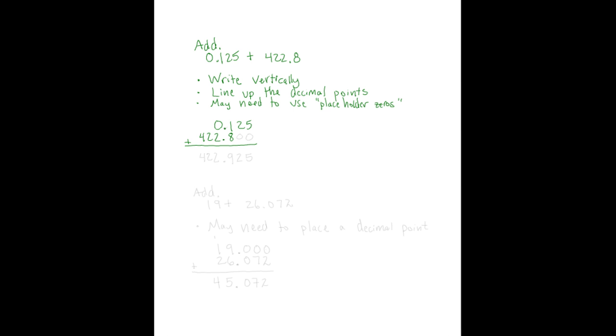Notice that the 5 and the 2 are sort of hanging. They don't have digits beneath them. So we want to insert placeholder zeros, one beneath the 2 and one beneath the 5. Once we have that, now we can actually complete this addition problem. 5 plus 0 is 5. 2 plus 0 is 2. 1 plus 8 is 9.